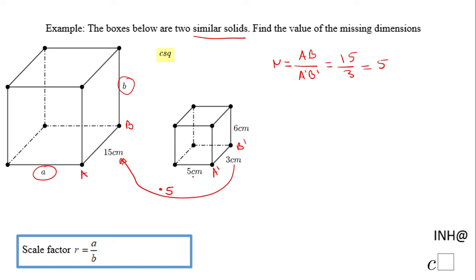Look at here. I'm gonna use the same scale factor of 5, and a will be nothing else than 5 times the scale factor of 5. That will be 25. What about B?